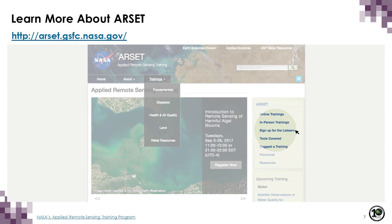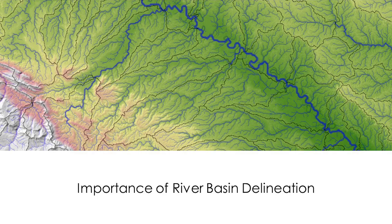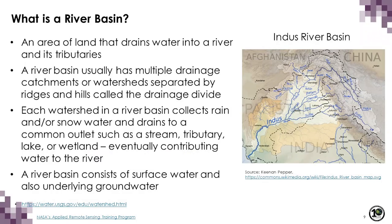RSAT also has a listserv you can join to stay informed about activities. This is a unique webinar in that it is a single session focused on a very specific topic about river basin delineation. First, we'll discuss why it is important to delineate a river basin. So what is a river basin? It is an area of land that drains water into a river and its tributaries.